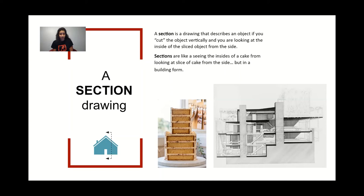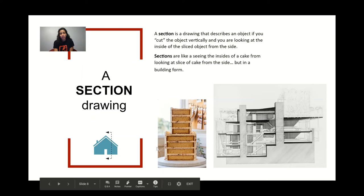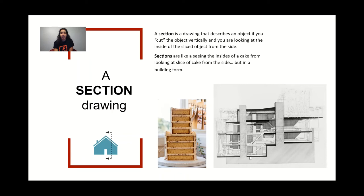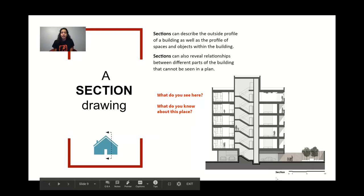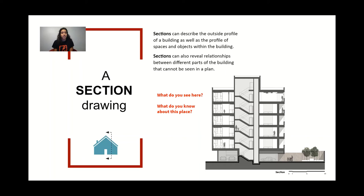Take a look at these two images. On the image of the cake, you can see that the cake is sliced through, and you can see the different layers of the cake and the icing that is in between the layers. Taking a look at the building section, you can see the different layers of the building and the different spaces that comprise the entire building. You can also see information like how thick the floors are and how people circulate through the space via the stairs. Sections can also describe the outside profile of a building, as well as the profile of the spaces and objects within. Sections also reveal relationships between the different parts of the building that cannot be seen in plan.